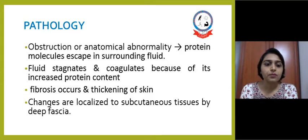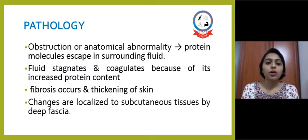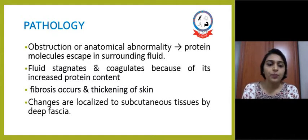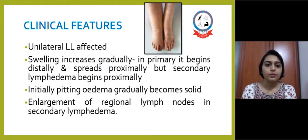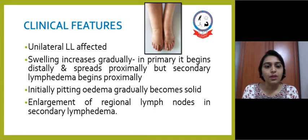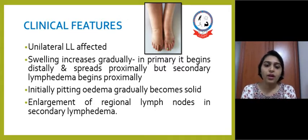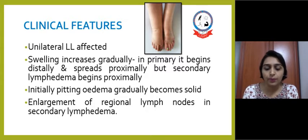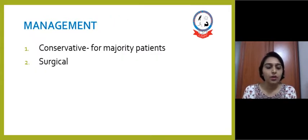The pathology of lymphedema involves obstruction or anatomical abnormality that causes protein molecules to escape into the surrounding fluid. The fluid stagnates and coagulates due to its increased protein content, causing fibrosis and thickening of the skin. Changes are localized to subcutaneous tissue by the deep fascia. Clinically, usually a unilateral lower limb is affected and swelling increases gradually. In primary lymphedema it begins distally and spreads proximally, whereas in secondary type it begins proximally. Initially there is pitting edema which gradually becomes solidified, and enlargement of regional lymph nodes in secondary lymphedema is common.